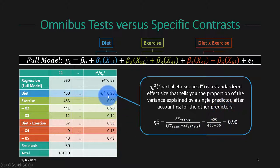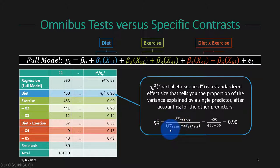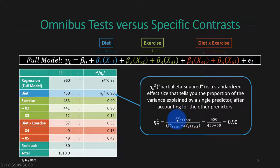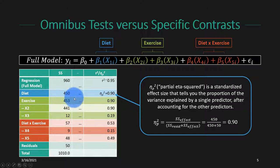The partial eta-squareds are new — we haven't calculated these before, but conceptually they are related to r-squared. Partial eta-squared is a standardized effect size that tells us about the proportion of variance explained by a single predictor after accounting for all other predictors in the model. Formally, this is the sum of squared errors of the effect divided by the sum of squared errors of the residuals plus the sum of squared errors for the effect.